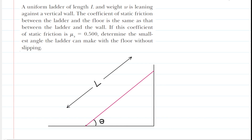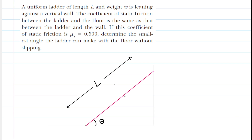If you haven't done so yet, make sure you pause the video and reread the problem before listening on. Our first step is to draw forces that are acting on the ladder. We head over to the center of mass of the ladder, mark a point right at its center, and draw a downward weight force pulling on the ladder.